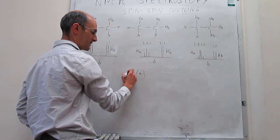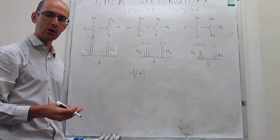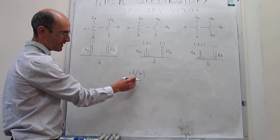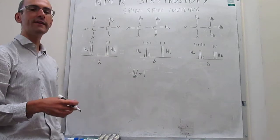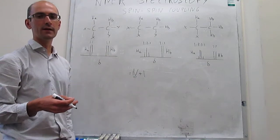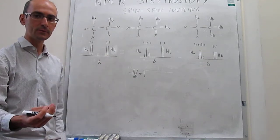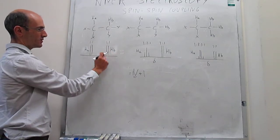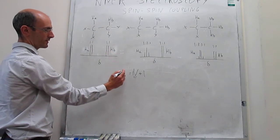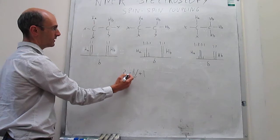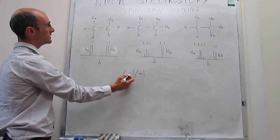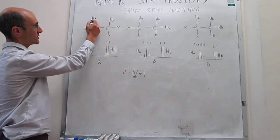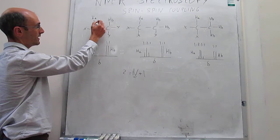This rule predicts the spin multiplicity — how many peaks we have — where N is the number of NMR-active nuclei that are causing the splitting. For example, Ha here is a doublet, so that signal has two peaks, and the reason is that there is only one Hb causing the splitting.